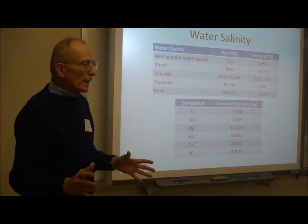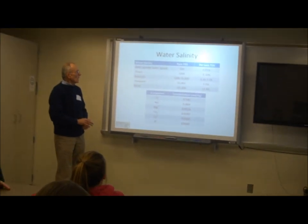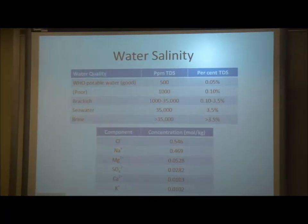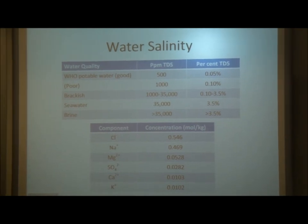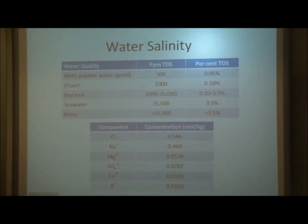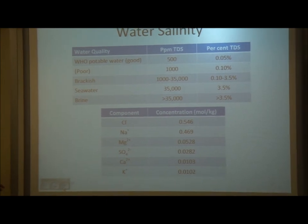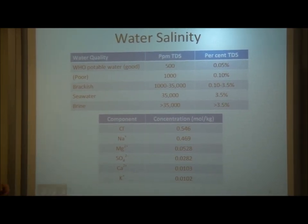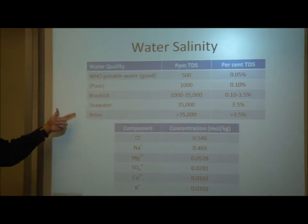Before we go on, I need to define a few terms. Poor quality water, which if it is safe in other ways and not harmful for human consumption, is up to 1,000 parts per million total dissolved solids. Brackish water lies between potable water and seawater.